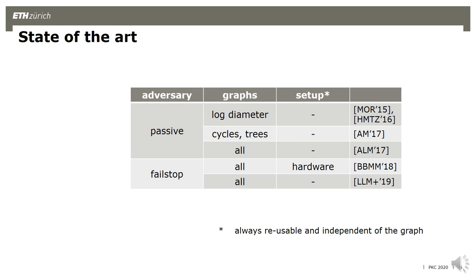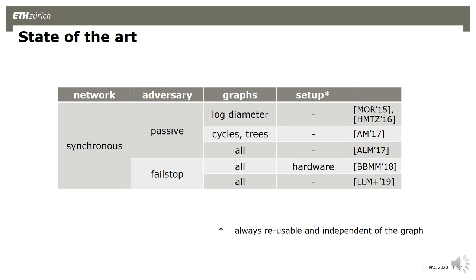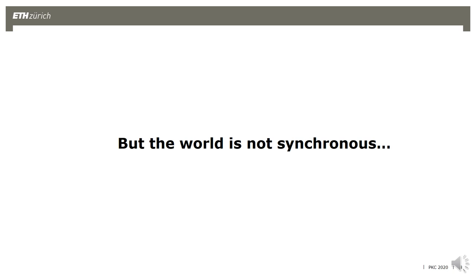One implicit assumption behind all of these protocols is a network assumption: they all require that the network is fully synchronous, meaning that the parties are synchronized and there is a known upper bound on message delivery time, and it's guaranteed that a message which is sent will be delivered before that upper bound. But this is not how the real world works — messages are delayed and parties are desynchronized.